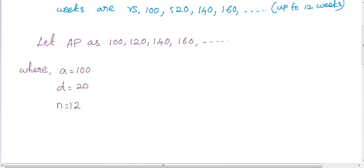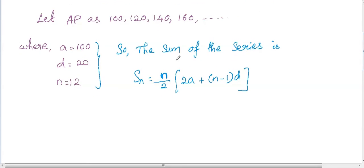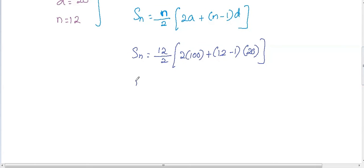Now we need to find the sum of the series. The sum of the series formula is Sn = n/2 × [2a + (n-1)d], where n equals 12, a is the first term which is 100, and d is the common difference, the increased number of rupees every week, which is 20.